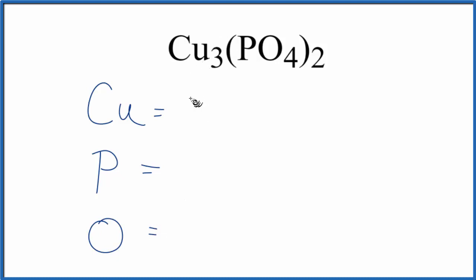For the copper there's a subscript of three, so we have three copper atoms here. For the phosphorus there's nothing written, so we assume that to be just one. But this two applies to everything in parentheses, so we have two times one, two phosphorus atoms, two times four, eight oxygen atoms.